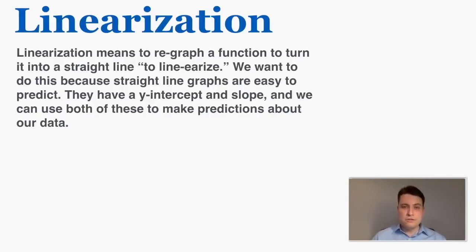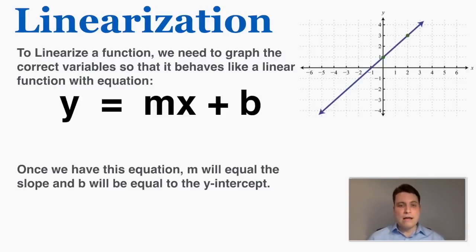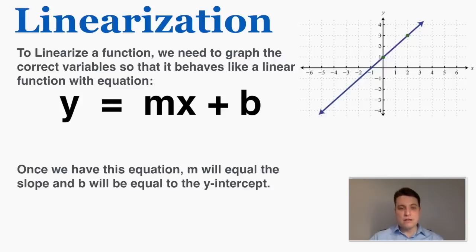So if we have a clear simple pattern for our data — a simple slope and a simple y-intercept — we can use that to predict what our data will do in the future or for values that we haven't graphed yet. You may know that the equation for a linear line is y equals mx plus b, so the idea here is that we want to rewrite other equations so that they take this form y equals mx plus b and become a straight line.